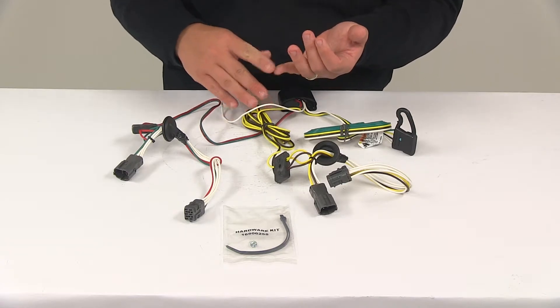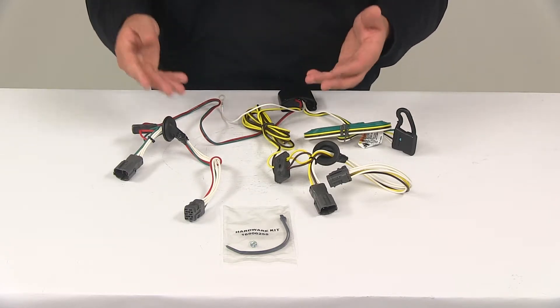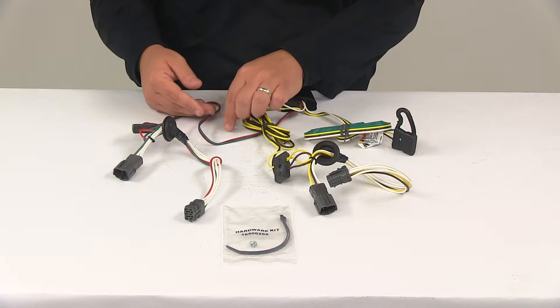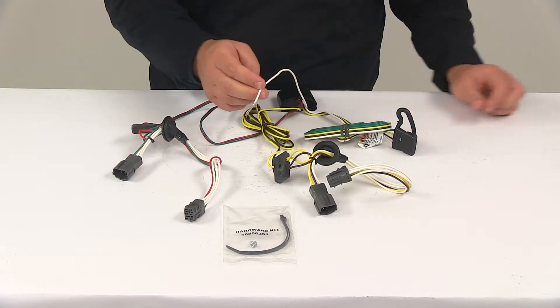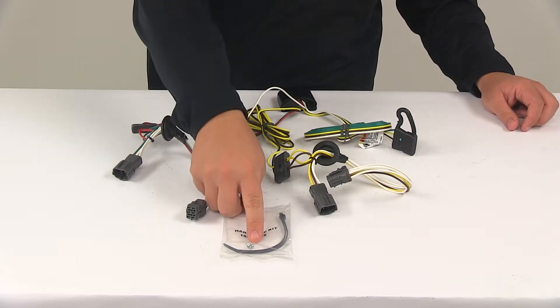Locate the connection points. Be sure you get the grommets in place. Make your connectors. Then, you're going to make a ground connection. It's going to be your white wire with a ring terminal attached to it. You want to get that grounded to a nice, clean, metal surface with the included screw.